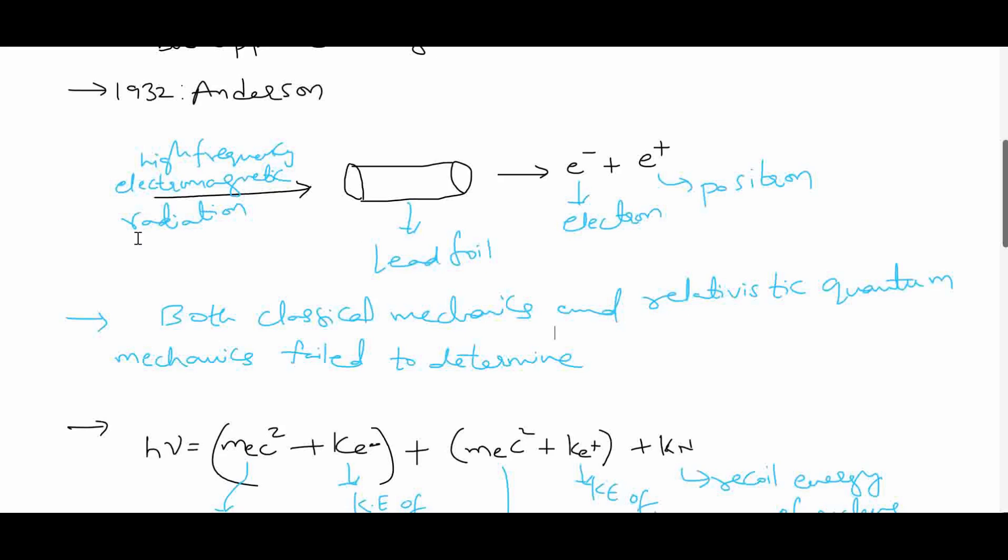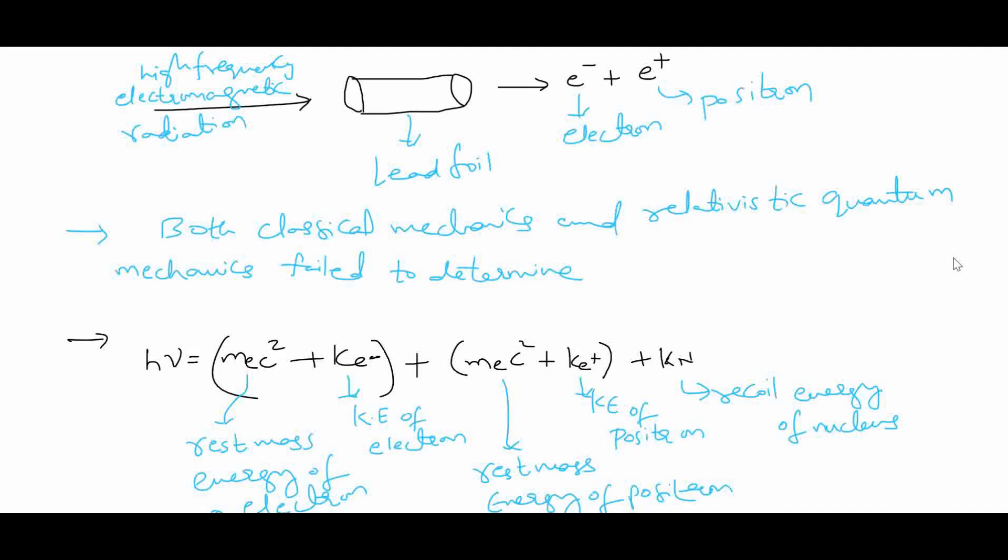Both classical mechanics and relativistic quantum mechanics fail to determine or predict that the antiparticle of electron, positron, cannot be produced in free space because it needs conservation of energy.